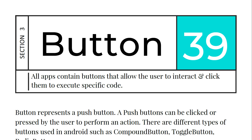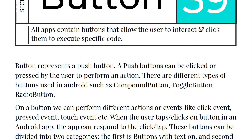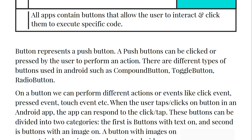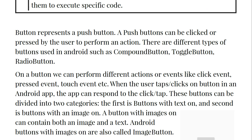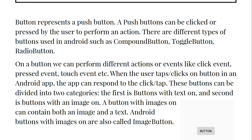All apps contain buttons that allow the user to interact and click them to execute specific code. Buttons represent a push button — a push button can be clicked or pressed by the user to perform an action. There are different types of buttons used in Android, such as compound buttons, toggle buttons, and radio buttons.